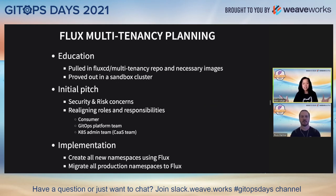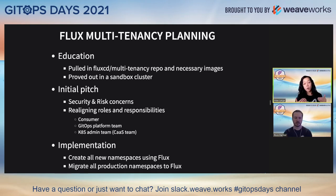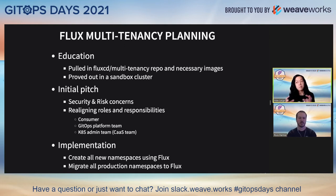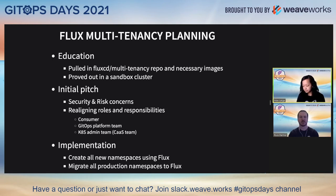The answer: Flux multi-tenancy. First order of business was education. I can't tell you how many times I watched Stefan Prodan's 2019 KubeCon presentation on Flux multi-tenancy — I watched it over and over. Since we sit behind a corporate firewall, we brought the Flux multi-tenancy GitHub repository within our walls along with the necessary Docker images from the public registry. Through our partnership with the Kubernetes admin team, they provided a sandbox cluster for us to play around with Flux multi-tenancy. Once we had enough experience, we knew it was time to pitch it. It took a couple of pitches to get traction, and that's perfectly fine.